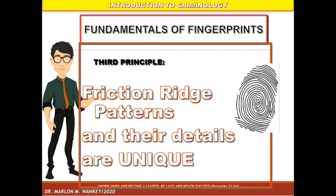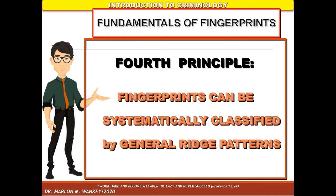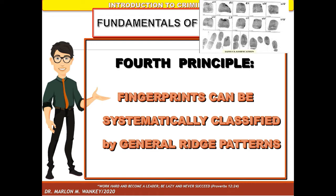The third principle: friction ridge patterns and their details are unique — this is the principle of infallibility. No two fingers have yet been found to possess identical ridge characteristics, even in identical twins. That is why fingerprints are accurate for identification. The fourth principle: fingerprints can be systematically classified by general ridge patterns.